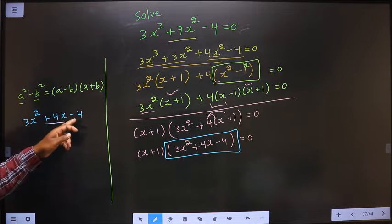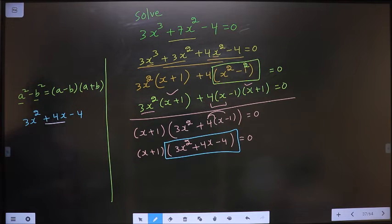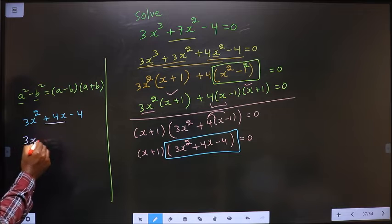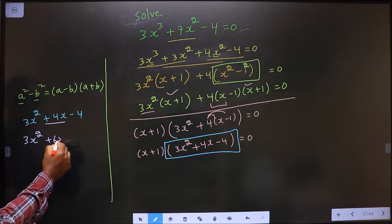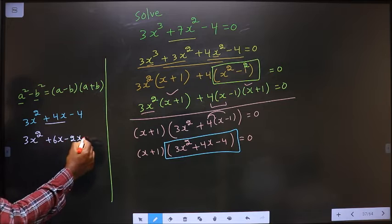So 3 into 4 is 12. Here I should get 4. So 6 into 2 is 12. 6 + 2 is 4. So in place of 4x, now I write 6x - 2x - 4.